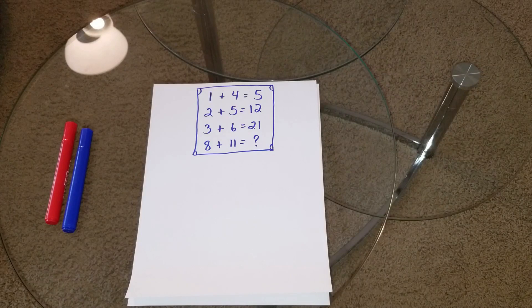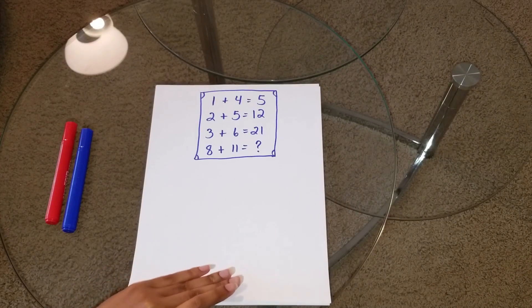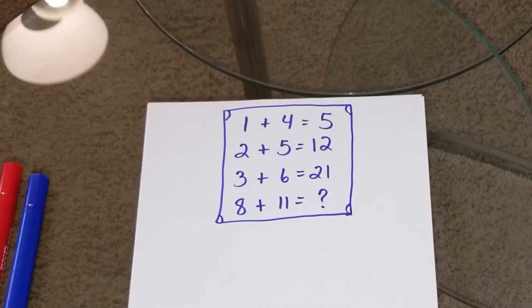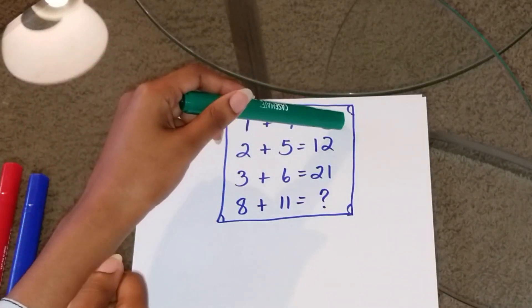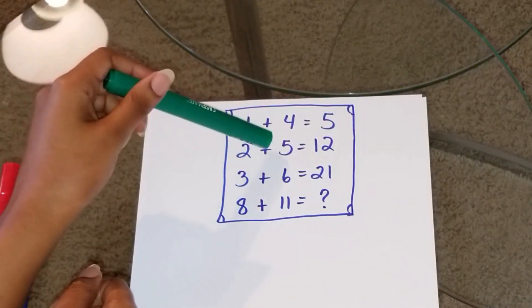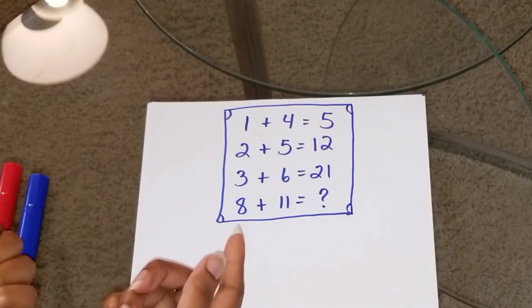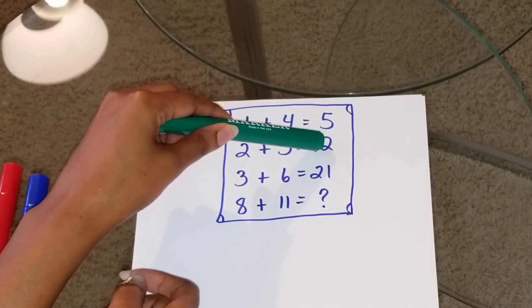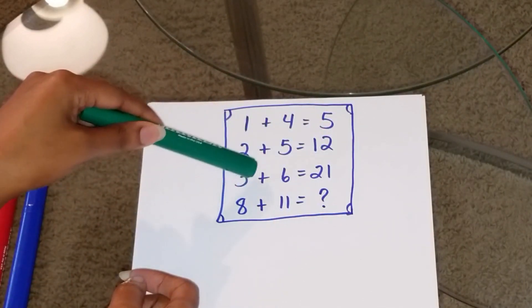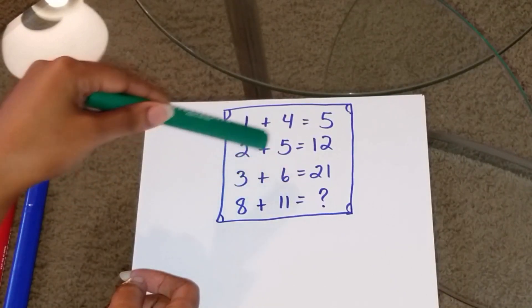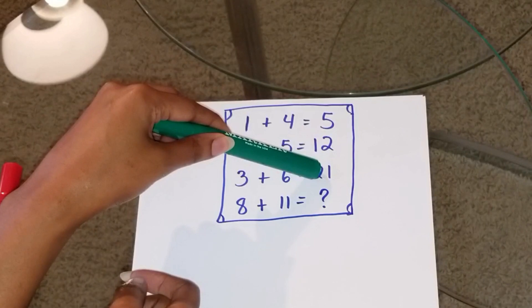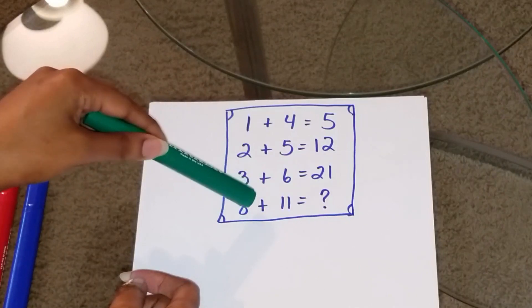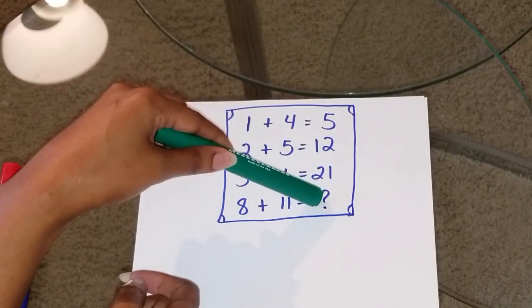The most common answer that I'm seeing is 40. So, we're going to start with 40. This is how people are getting 40 because if 1 plus 4 equals 5, that's basic, right? They're saying 2 plus 5 is equal to 7. And then 7 plus 5 is equal to 12. If we keep going with that pattern, 3 plus 6 is 9. And 9 plus 12 gives you 21. Keep going with that pattern. 8 plus 11 is equal to 19. And 19 plus 21 gives you 40.